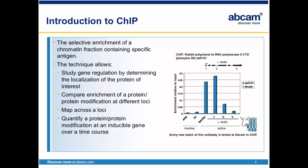In the example presented, AB5131, precipitating RNA polymerase type 2, has been used to map across the gamma-actin gene. The enrichment of the polymerase was found in the 5' region of the actively transcribed actin. ChIP can also find application in quantification of protein or protein modification at an inducible gene over a time course.